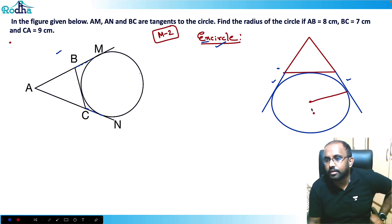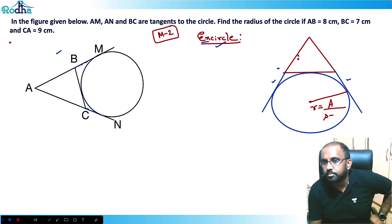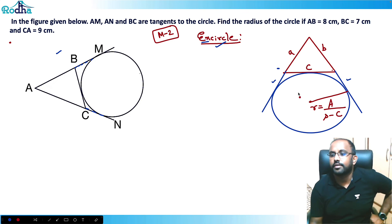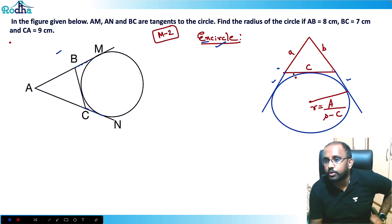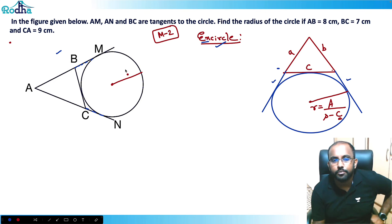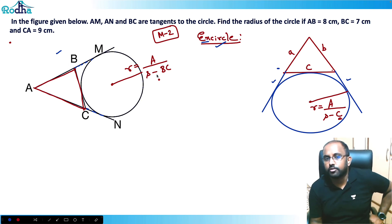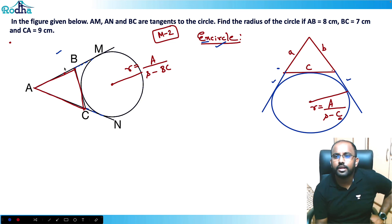The excircle radius formula is: r = Area of triangle / (s − c), where c is the side of the original triangle to which the excircle is tangent, and s is the semi-perimeter. Here the circle is tangent to BC, so r = Area / (s − BC).